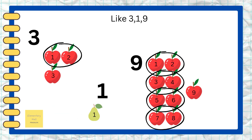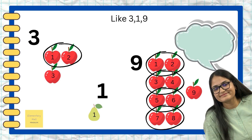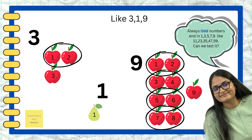Number three, number one, and number nine are odd numbers. When we group number three in pairs, we can see that there is one apple left alone. And even in number nine, there is one apple left alone, and number one doesn't have any pair to it.